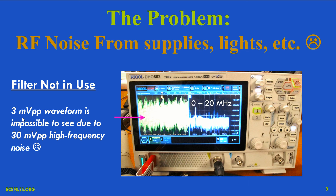The noise is 30 millivolts peak-to-peak in amplitude on this screen. Meanwhile, the signal we're trying to look at — the audio waveform out of the microphone — is only a few millivolts peak-to-peak in amplitude typically. So what is this noise and how is it getting in?